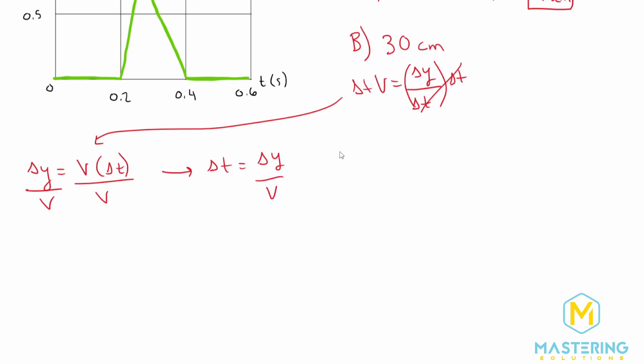So we have change in the distance is 30 centimeters, and the velocity that we just found is 7.5 centimeters per one beat.